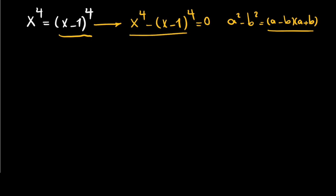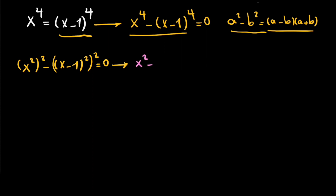In this equation I can write (x squared) squared minus (x minus 1 squared) squared, equals 0. According to that factoring rule, we can write it as (x squared minus (x minus 1) squared) times (x squared plus (x minus 1) squared) equals 0.